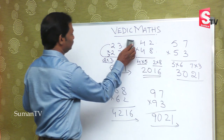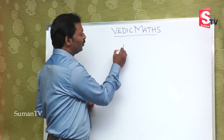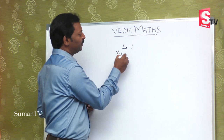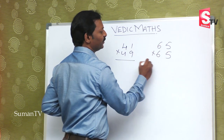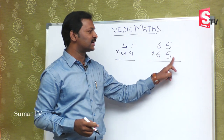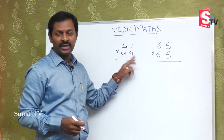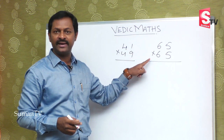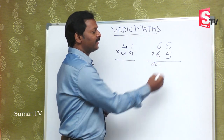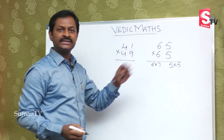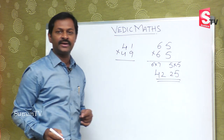We will see one more example. Suppose if you get 41 multiplied by 49, or 65 multiplied by 65. The units place — 5 and 5 makes 10, and 1 and 9 also makes 10. So 6 into 7 is 42 and 5 into 5 is 25. This is the right answer.